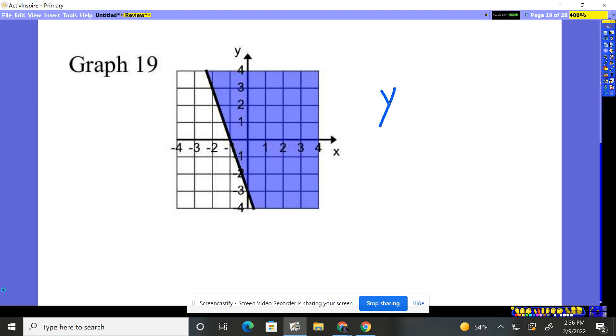So it's got to be a Y either greater than or less than. Now let's think. I shaded this direction. That's going what? Up. So it's got to be a greater than.